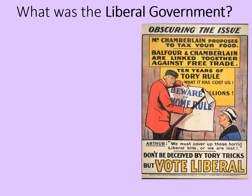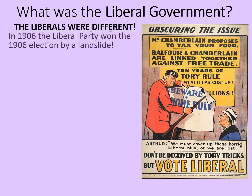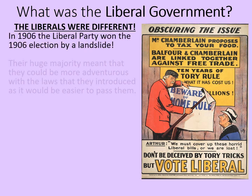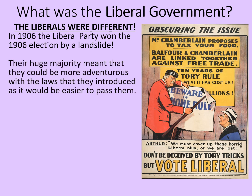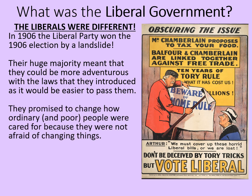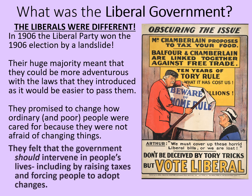So what was the Liberal government and how was it different? In 1906 the Liberal Party won the election by a landslide. Their huge majority meant that they could be more adventurous with the laws that they introduced as it would be easier to pass them. They promised to change how ordinary and poor people were cared for because they were not afraid of changing things. They felt that the government should intervene in people's lives, including by raising taxes and forcing people to adopt these changes even if they didn't like them.